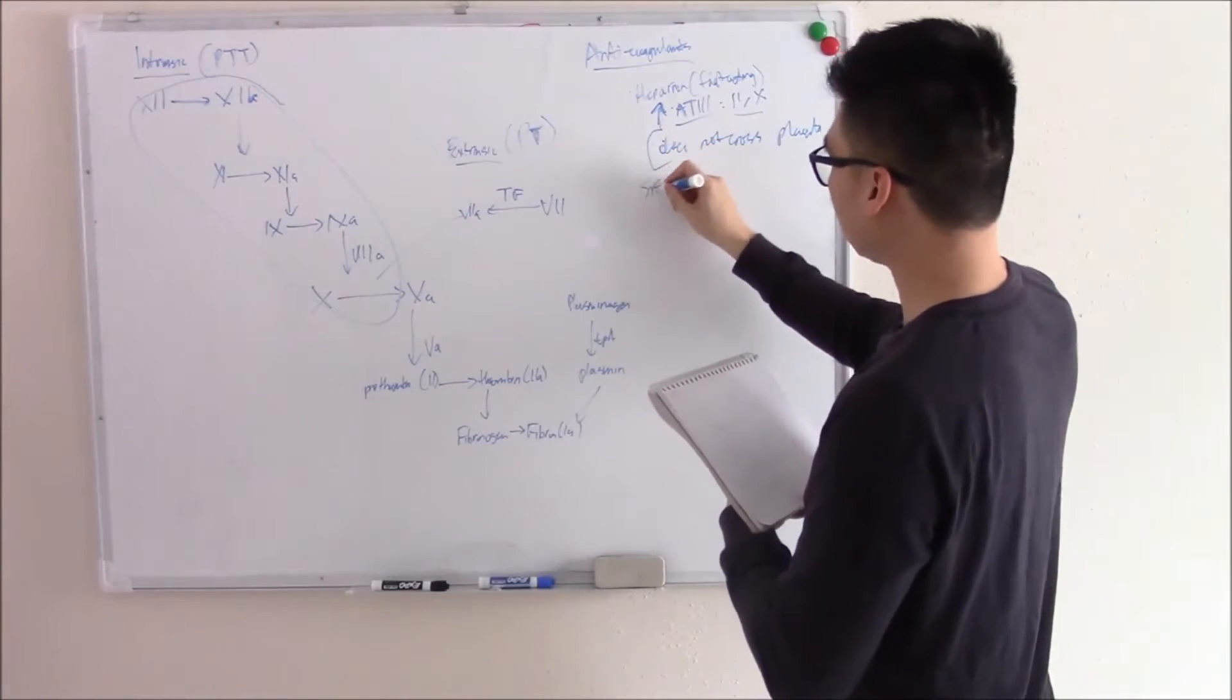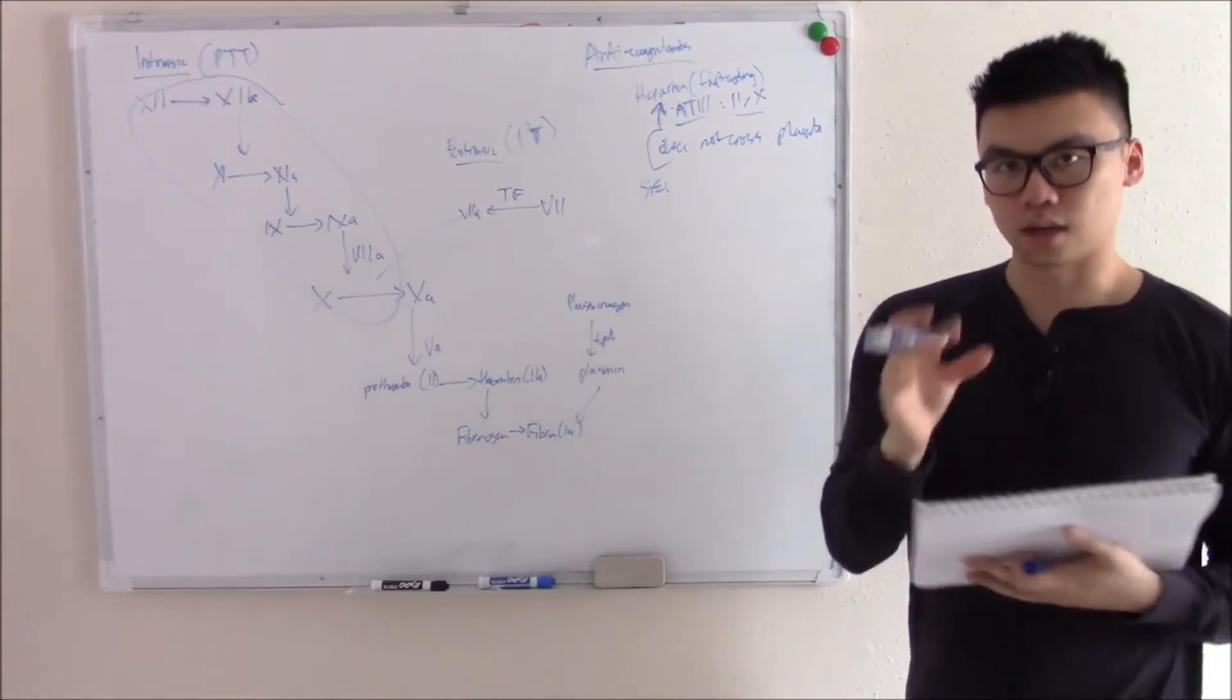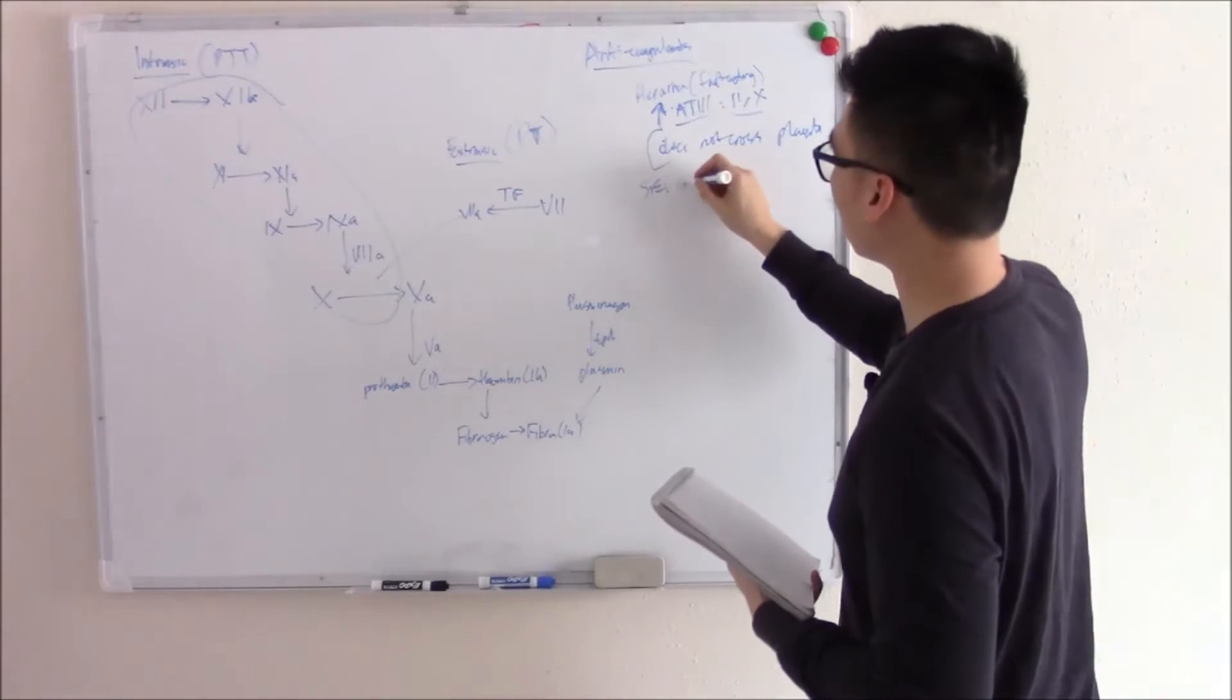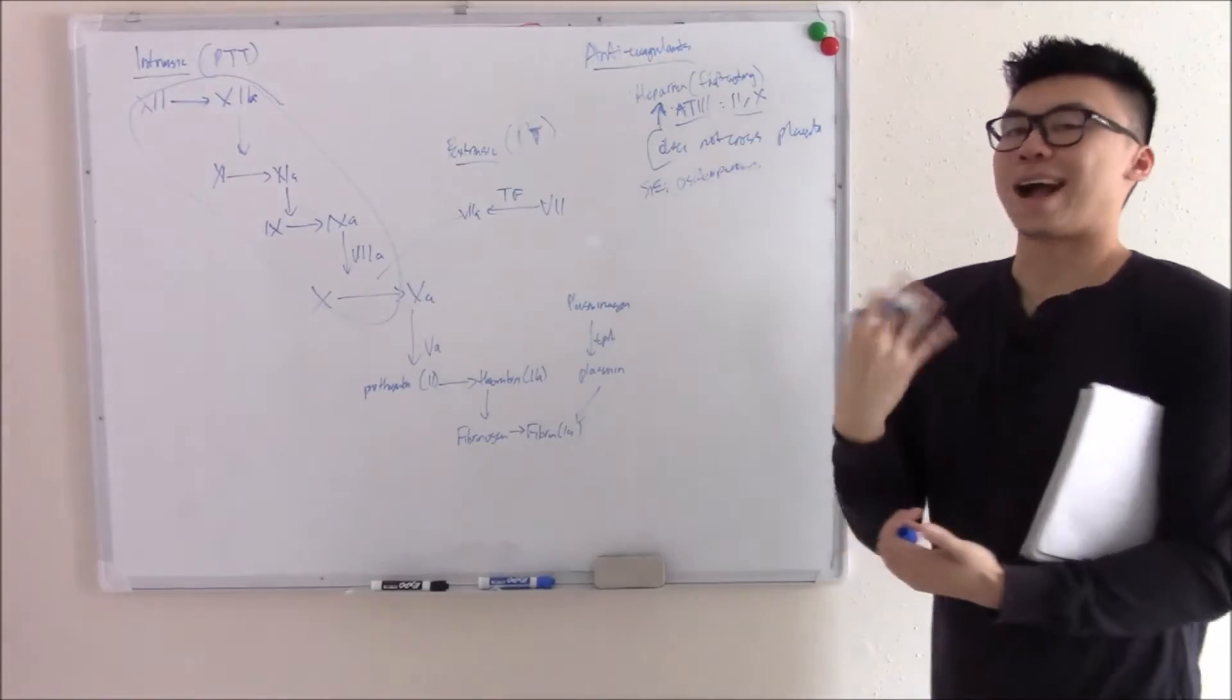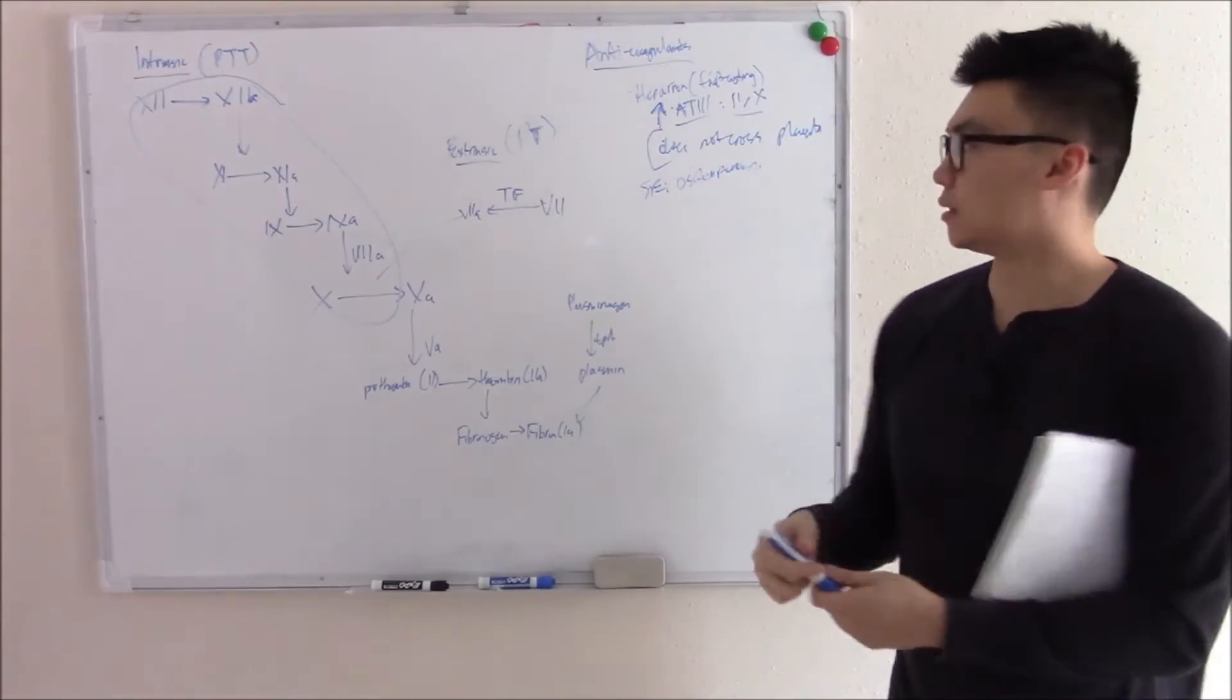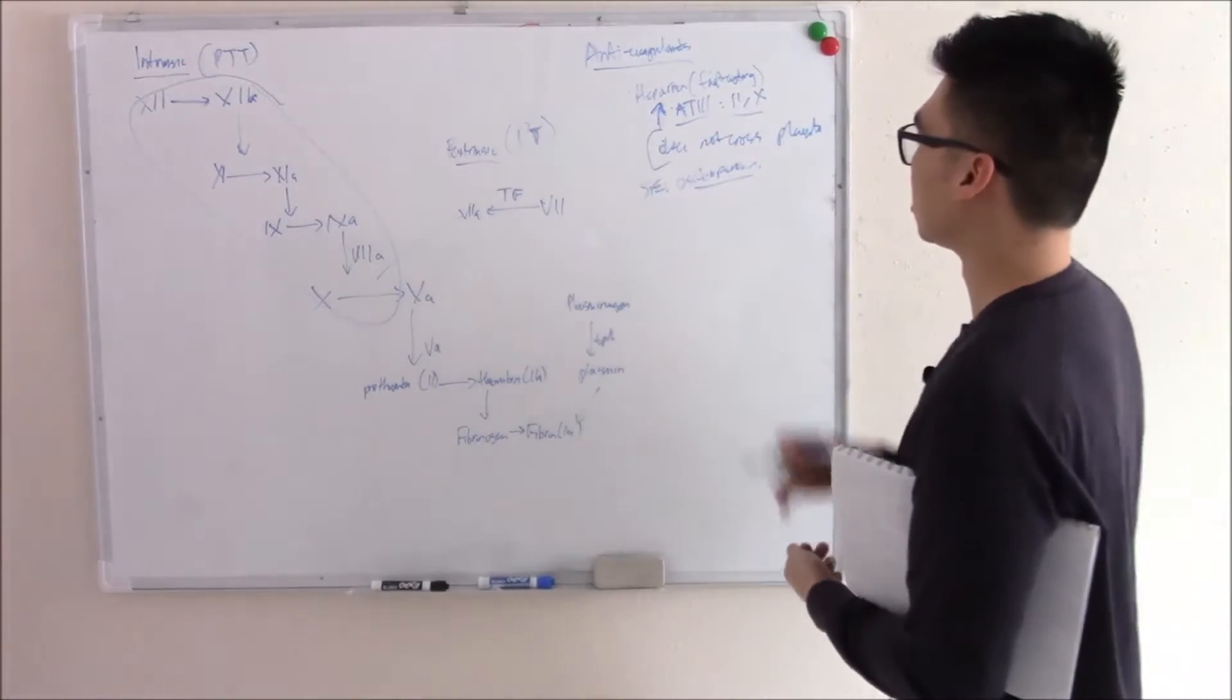Some side effects. You're gonna have bleeding because that's what it does. Other side effects we talked about drug induced heparin induced thrombocytopenia. So don't forget about that. Osteoporosis is a big one especially in prolonged use. The mechanism of which is still not well understood. It seems to activate osteoclasts and RANK-L expression more. So it causes bone breakdown and osteoporosis with prolonged use. In the acute setting it's usually not a problem.